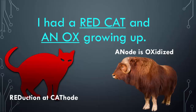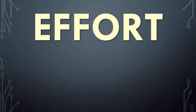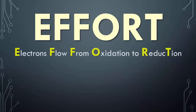Write down these two mnemonics in your reference table. First: 'red cat and an ox' — reduction at cathode, oxidation at anode. Second: EFFURT — Electrons Flow From oxidation to Reduction. Since the anode does oxidation and the cathode does reduction, electrons flow from the anode to the cathode in a voltaic cell. Another way to remember it: it goes from A to C, alphabetical order.